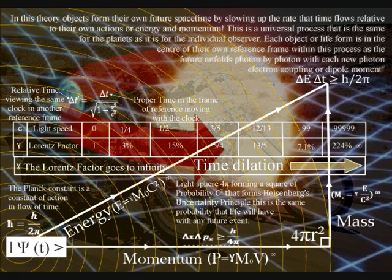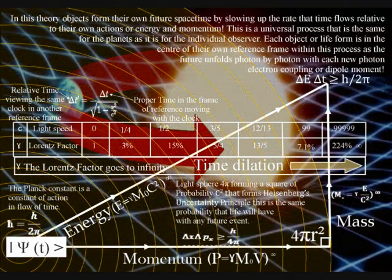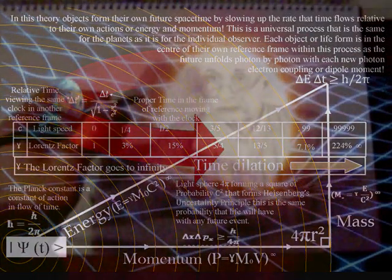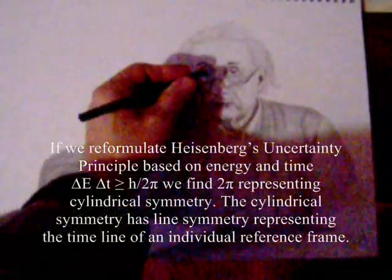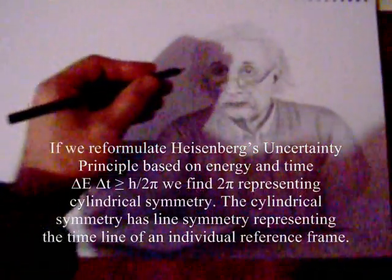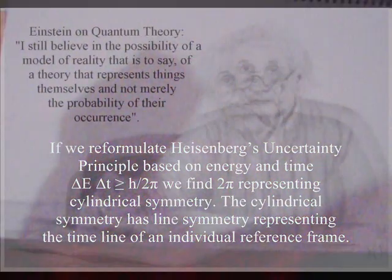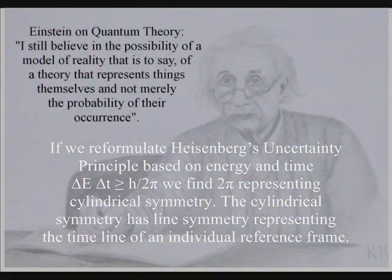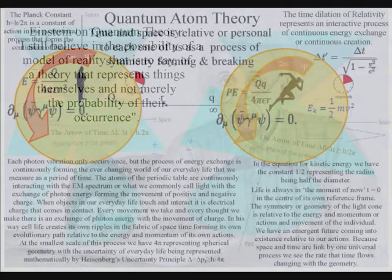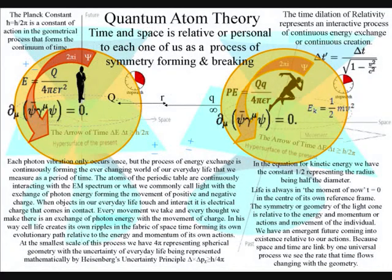An artist will take energy and time to create a work of art because the atoms of the hand and eye have bonded together, forming the movement of electric charge, creating their own potential future. Creation is truly in the hand and eye of the beholder in this theory.